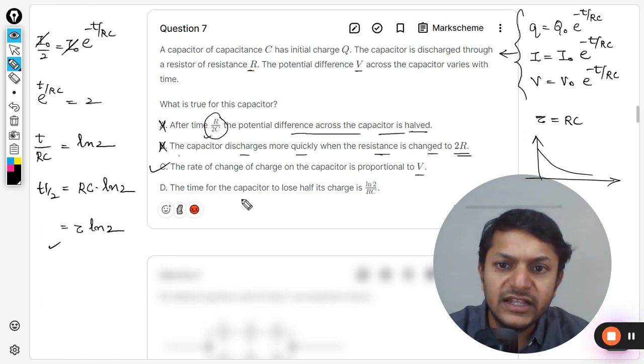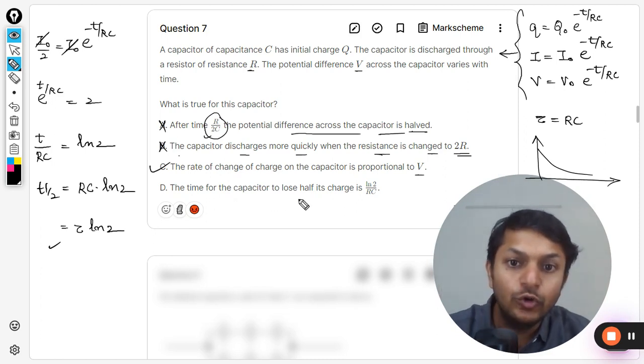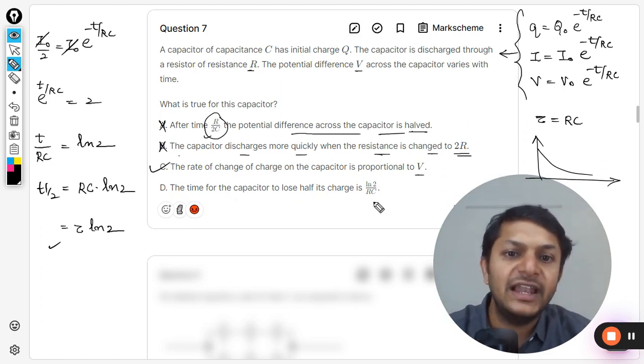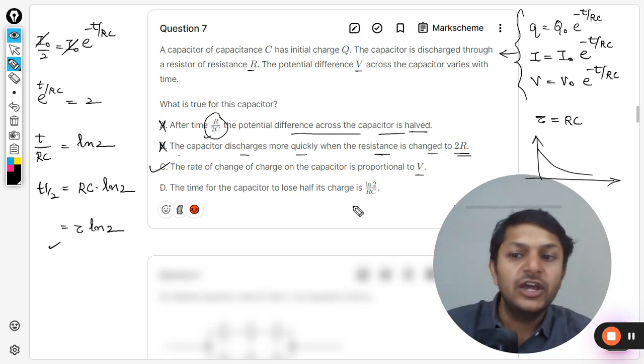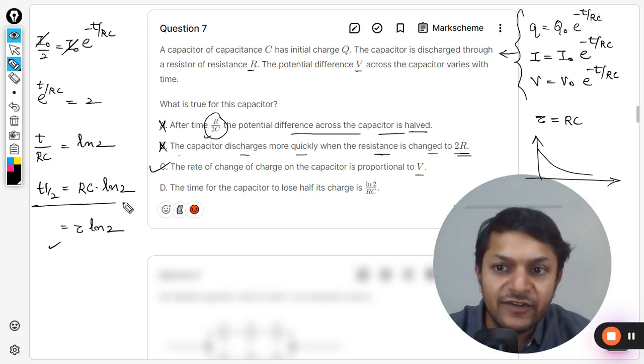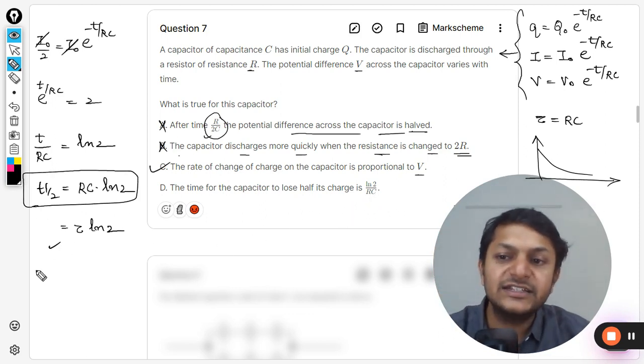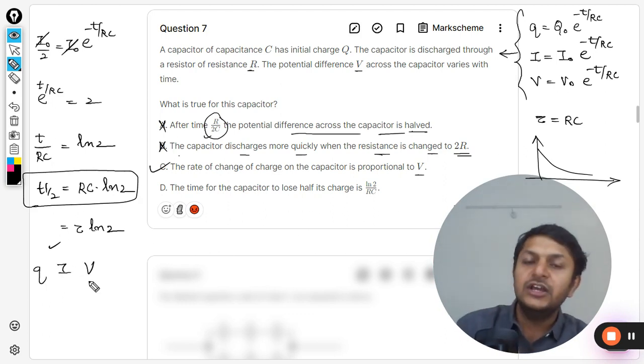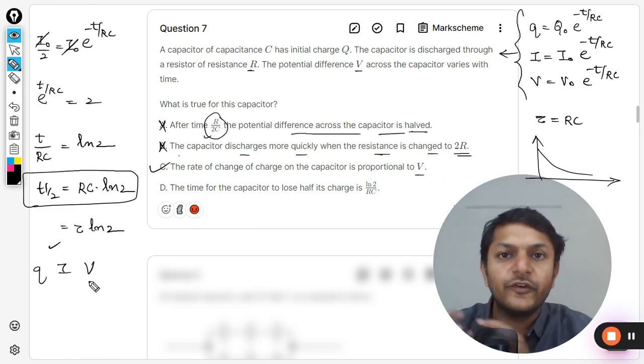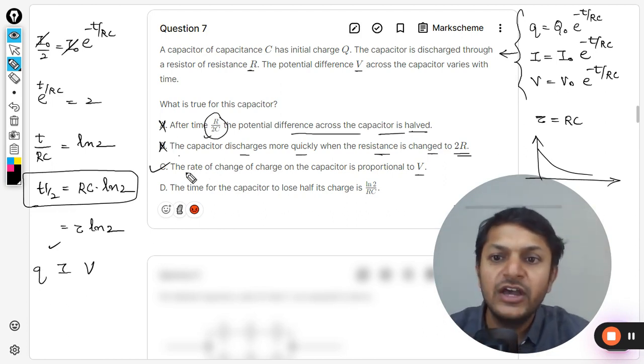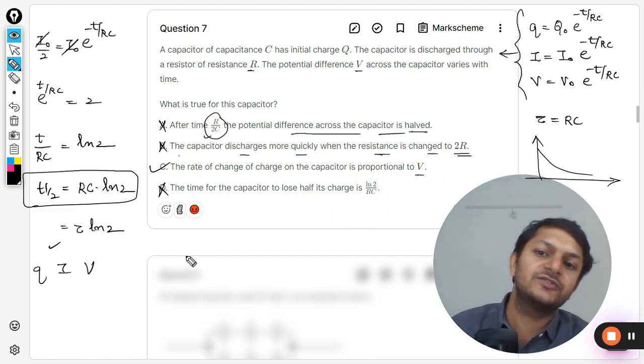D: The time of the capacitor to lose half its charge is ln 2 divided by RC. No, my dear students, half-life is given by this, and this is same for the charge, for current, as well as for the potential. So this much is the time required for charge to become half, for current to become half, as well as for the potential difference to become half. So even D is the wrong answer, and so clearly C is the correct option.